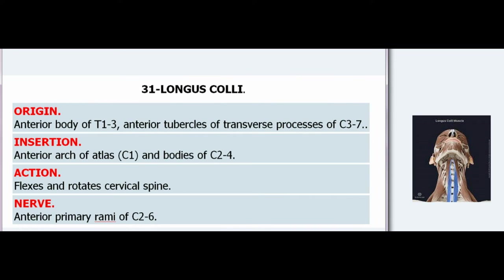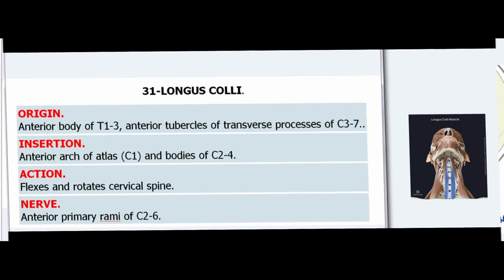31. Longus Colli. Origin: Anterior body of T1–3 and anterior tubercles of transverse processes of C3–7. Insertion: Anterior arch of atlas (C1) and bodies of C2–4. Action: Flexes and rotates cervical spine. Nerve: Anterior primary rami of C2–6.